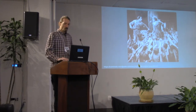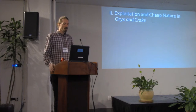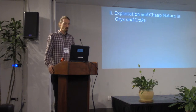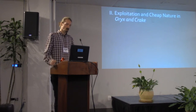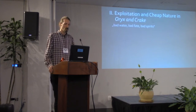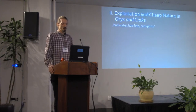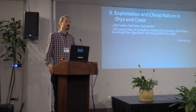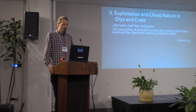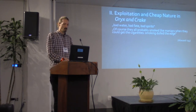The second chapter I want to discuss is even more interesting, for it depicts the systemic nature of global social injustice. The grown-up Jimmy forces Oryx — the former child slave — to tell him her childhood story, but interprets it according to his western perspective. When she tells of a cough that will eventually kill her father and the village's explanation of it as 'bad water, bad faith, bad spirits,' Jimmy suspects her father must have brought the illness on himself: 'Of course, they all probably smoked like maniacs when they could get cigarettes — smoking down the edge.'